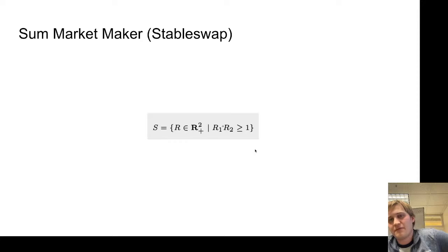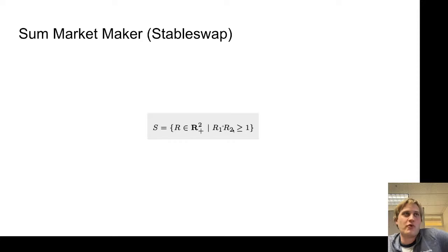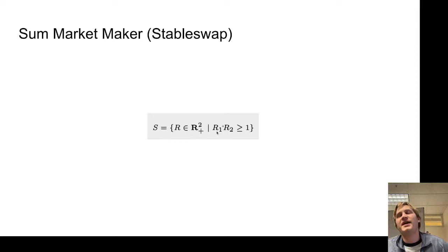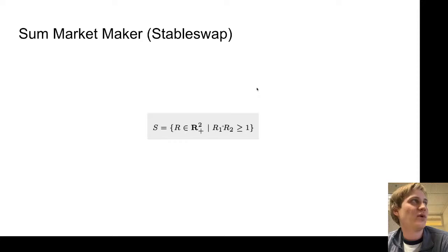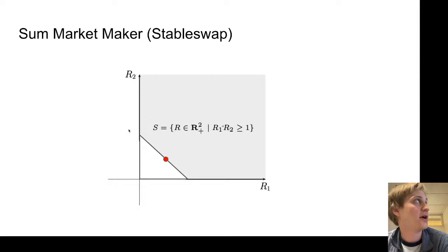There's yet another kind of market maker: the stable swap or sum market maker. Instead of multiplying the reserves, we're just adding them — R1 plus R2 is greater than or equal to 1. This is supposed to be a good option for stablecoins. If I've got USDC and DAI, they're both supposed to be equal to a dollar, so I'm basically indifferent — it's half a dozen of one or six of the other. The gray region is just this linear portion, cutting off at the corners since you can't have less than zero of R1 or R2.